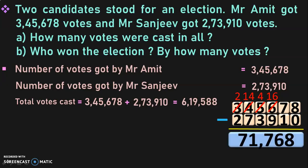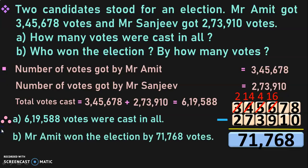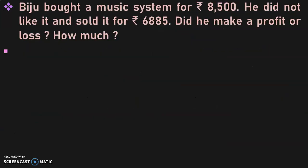The difference in votes is 71,768. Total votes cast: 6,19,588. Mr. Amit won the election by 71,768 votes.